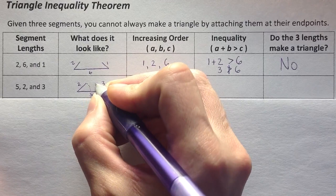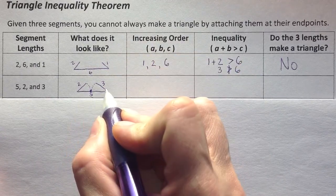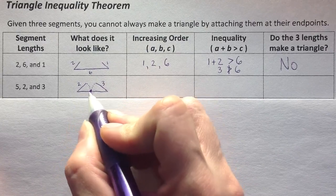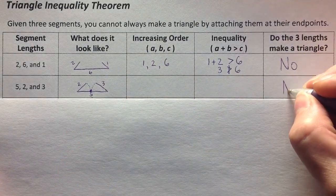Well, if you close these in, 2 and 3 actually will touch, but not until they lay totally flat, because they equaled exactly 5. So did it make a triangle? No.